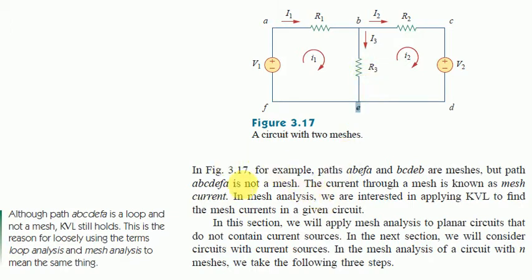So in figure 3.17, paths A, B, E, F, A and B, C, D, E, B are meshes. But path A, B, C, D, E, F, A is not a mesh.